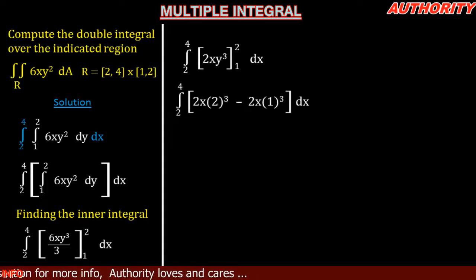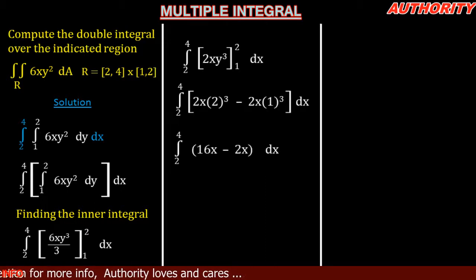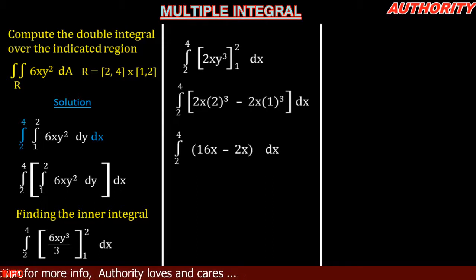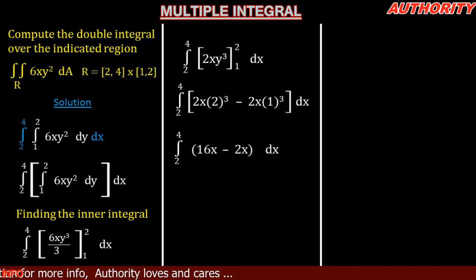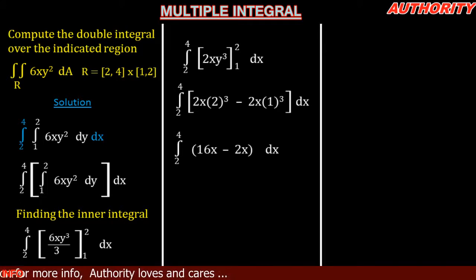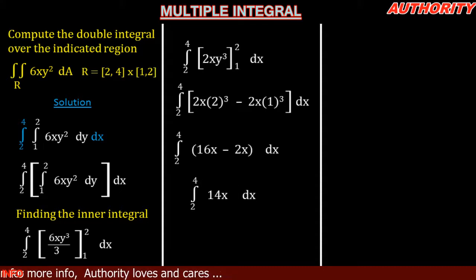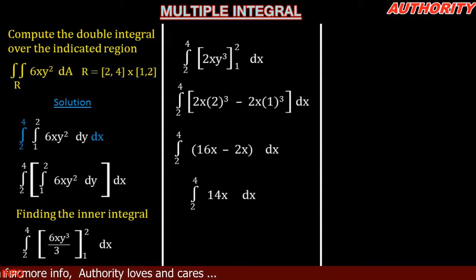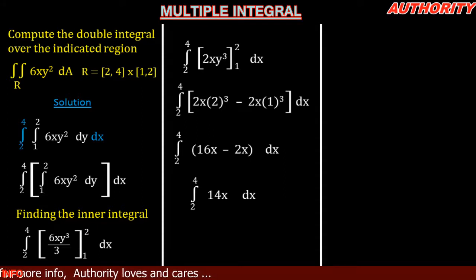2³ is 8, so 8 times 2x gives 16x. 1³ is 1, so 1 times 2x gives 2x. Therefore 16x minus 2x equals 14x. We now have the integral from 2 to 4 of 14x dx.